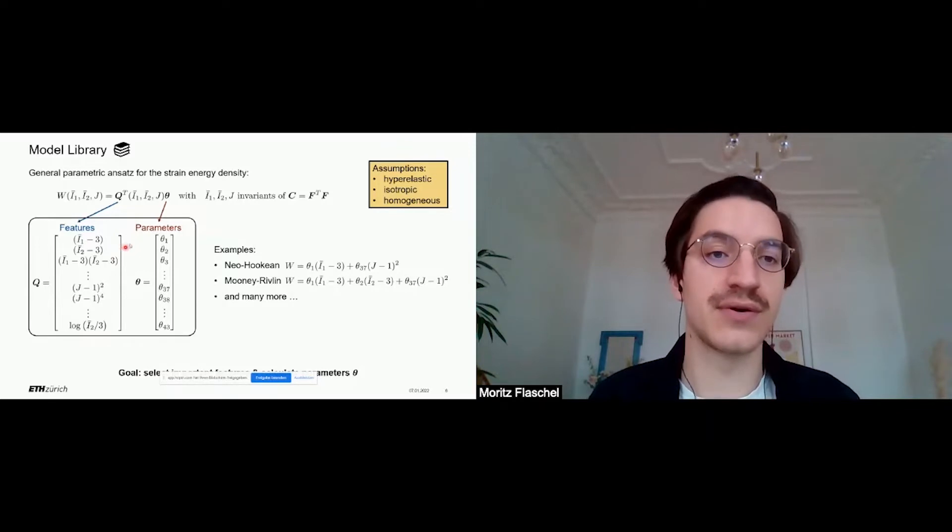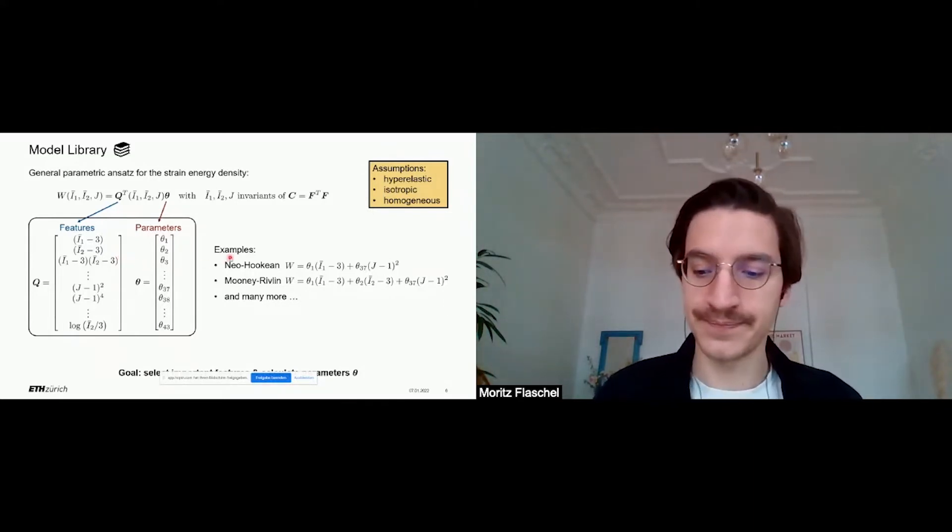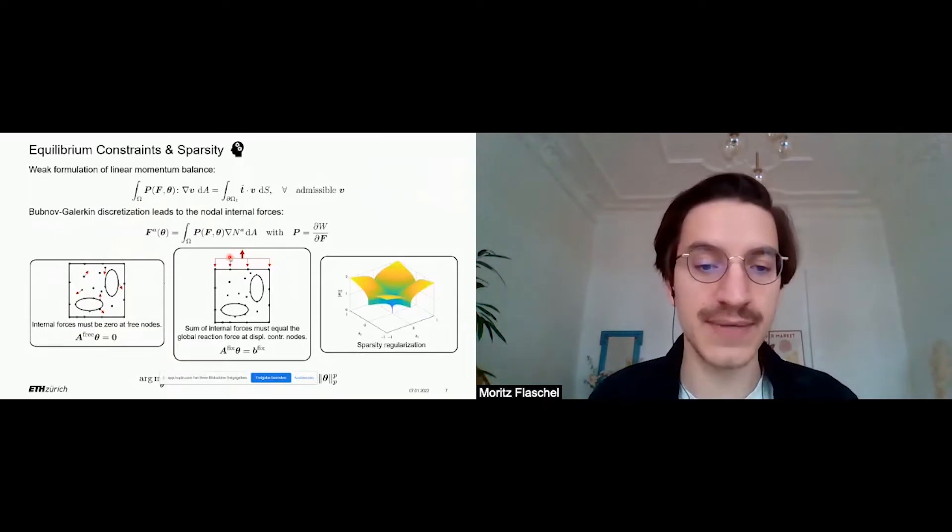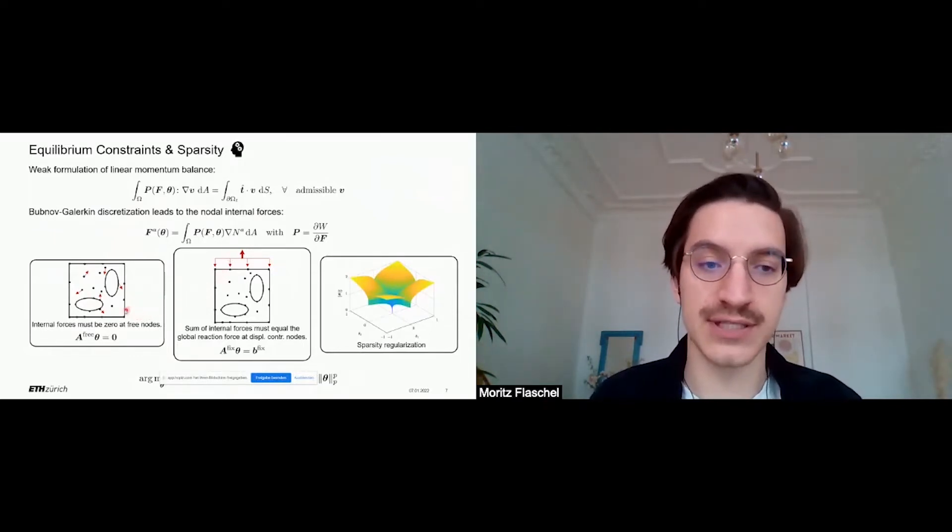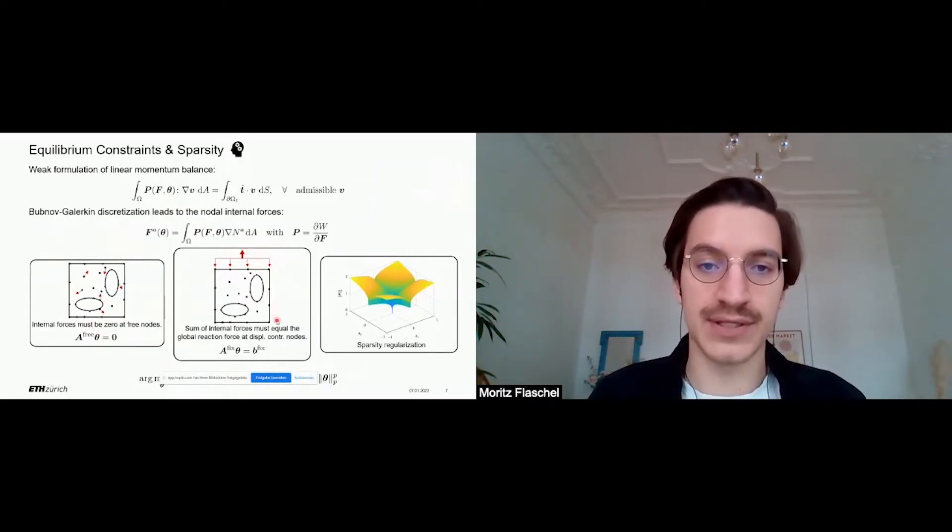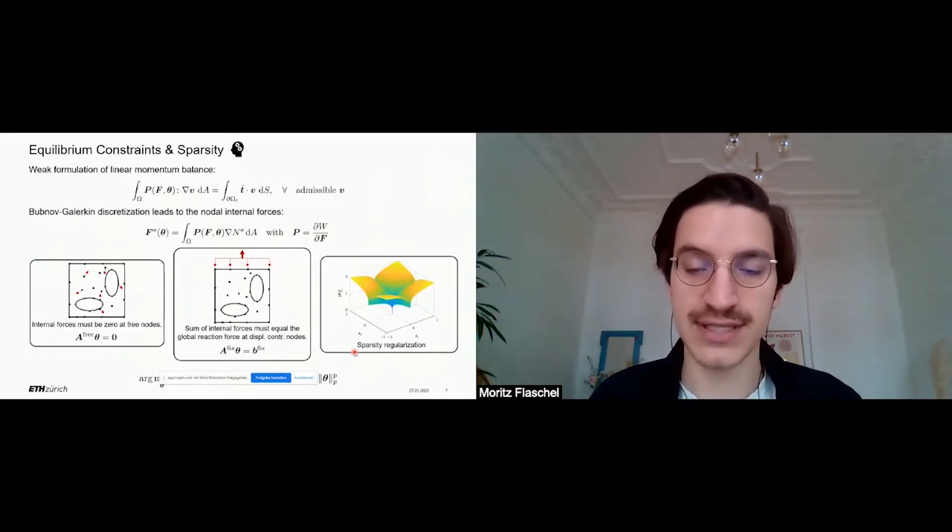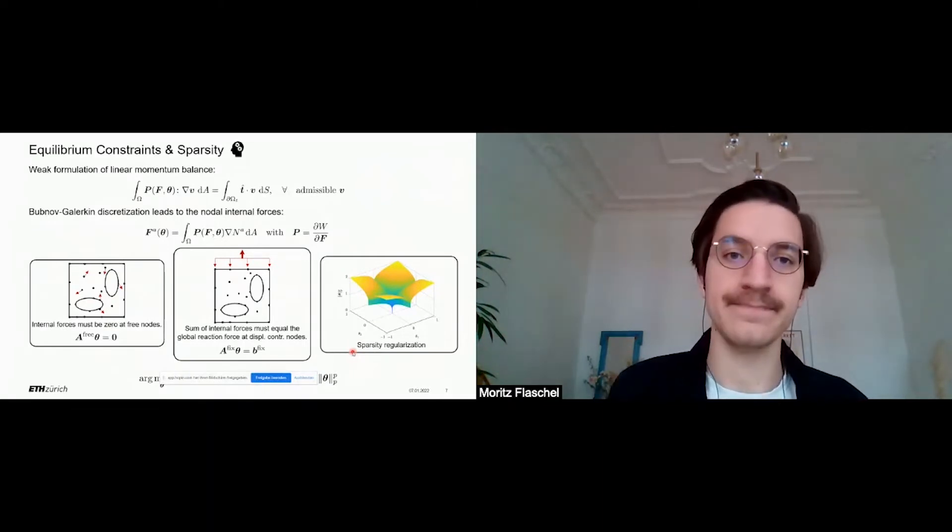The goal is now not only to calculate the unknown material parameters, but also to select which features are really important to describe the material behavior. We make use of the balance of linear momentum, which works as a linear constraint on the material parameter space. In particular, we minimize the internal forces at the free nodes in our test domain, as well as the differences between the global reaction force and the sum of internal forces at the boundary. If we would just minimize these two terms, we would obtain a dense solution vector theta, which would result in a very complex material model. Therefore, we additionally introduce a sparsity regularization term to our minimization problem, which promotes sparse solution vectors and hence simple material models.